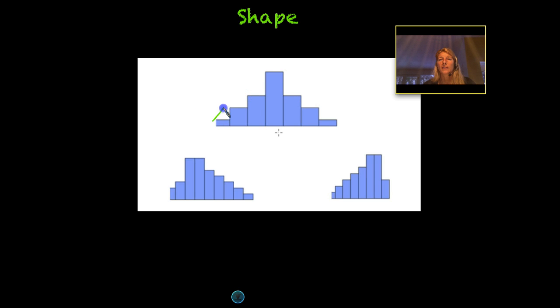Now notice on the first shape, it looks very symmetrical. If you draw a line, it would come up, come over, and we could say that it's almost even. We've got this blob in the middle.